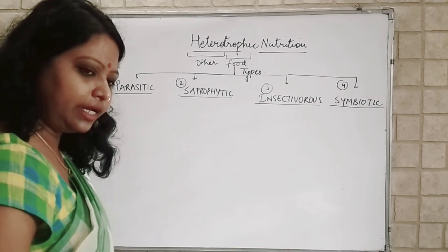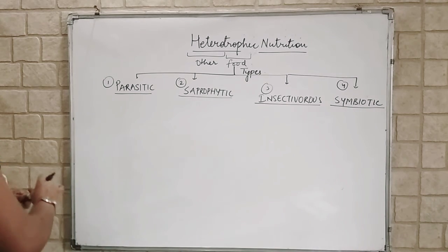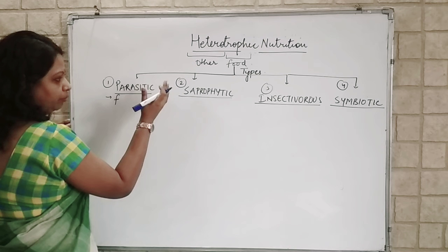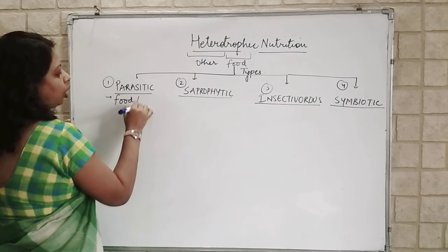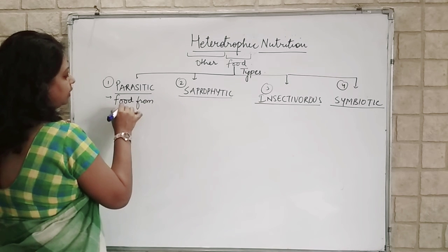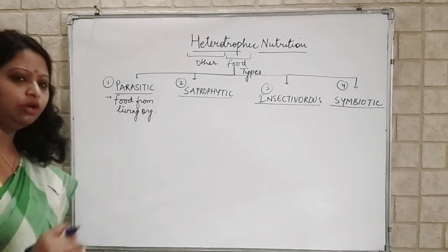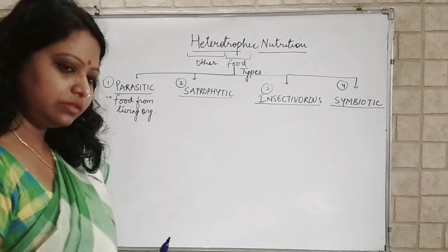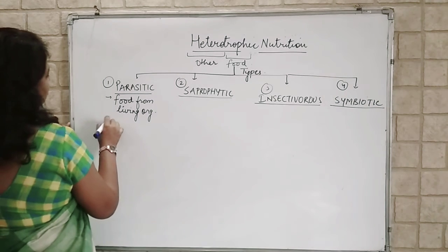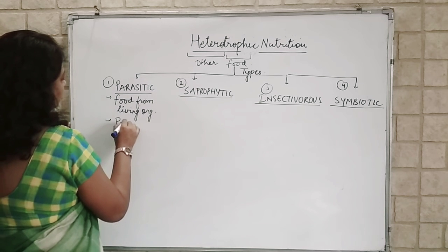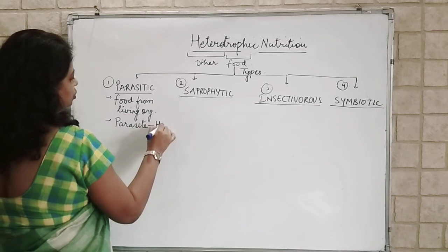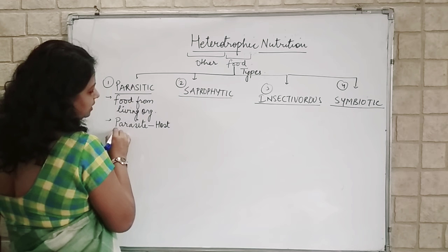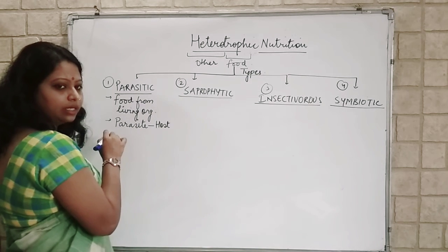Let's start with the Parasitic type of Nutrition. Here, plants get their food from other living organisms — from other living plants. There will be a relationship of Parasite and Host. The organism which is getting the nutrition from the host will be known as the Parasite, and the Host is the one providing the nutrition to the Parasite.